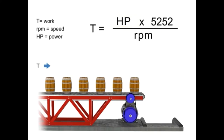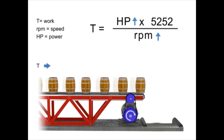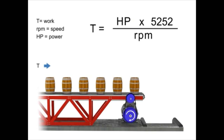Let's say we wish to keep torque constant but want to increase the production of barrels. If the torque or number of barrels on the conveyor belt remains constant but speed increases, then the horsepower of the motor also increases. In other words, a more powerful motor is required to produce the same amount of torque more quickly. Similarly, the opposite is true: if we wish torque to remain constant and decrease speed, then the horsepower of the motor also decreases.